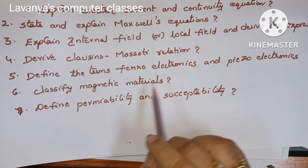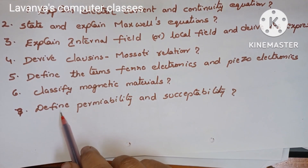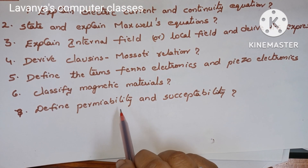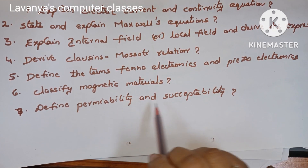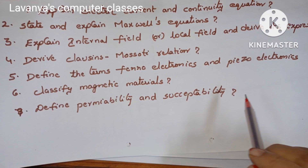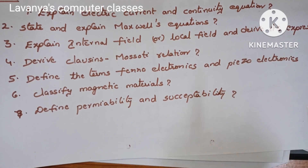Classify magnetic materials. Define permeability and susceptibility. These are the important questions in applied physics.